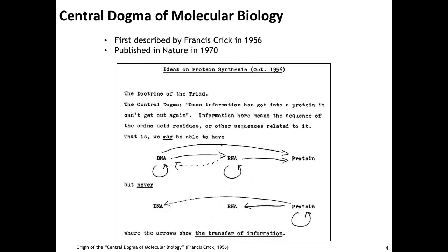Let's start with something you're probably all familiar with — the central dogma, published by Francis Crick. It basically describes how information flows: information is encoded in DNA, transcribed into RNA, which is processed — this is mRNA maturation, splicing — and that is then translated into the protein. Usually no information flows the other way. That was the idea.